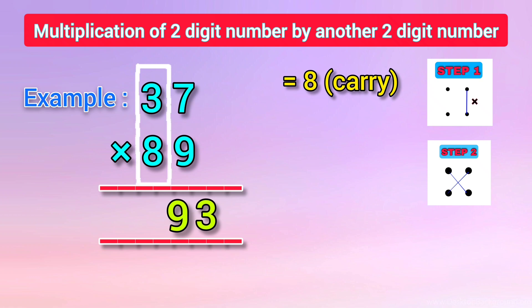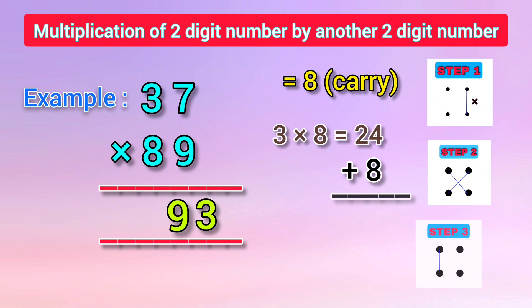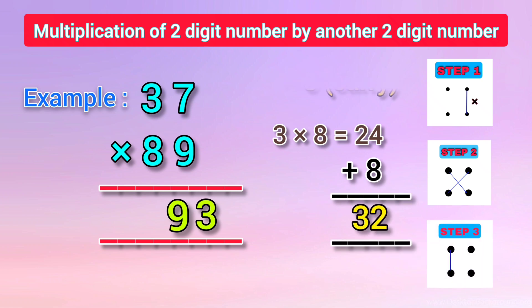In the third step, we multiply the numbers in the left column vertically. When 3 is multiplied by 8, we get 24. Now we add 8, which is carried over from the previous step: 24 plus 8 is equal to 32. We put down 32. Therefore, the answer is 3293.